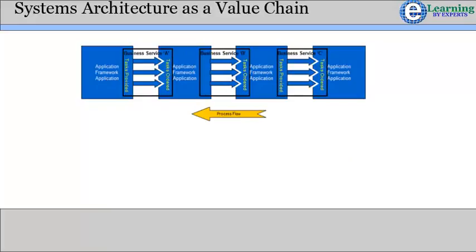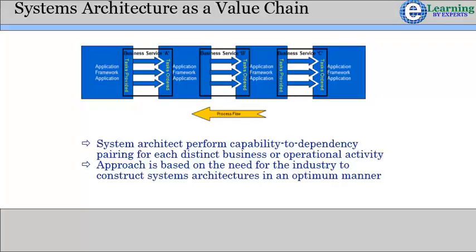The business service acts to encapsulate the business process by highlighting each application pair in the value chain, and pairing capability to dependency for each distinct business or operator operational activity. The TM Forum Business Service approach is based on the need for the industry to construct systems architectures in an optimum manner. The optimization is based on the value chain, where the overall chain is optimized — not just the individual links in the chain. The result is a shift to a solutions architecture perspective from the vendor perspective, putting the focus on the business's need for an optimized solution — the supply and value chain — not just on independently optimized applications.